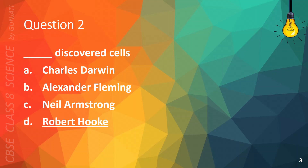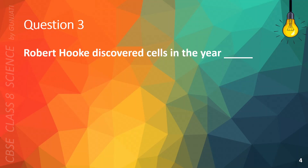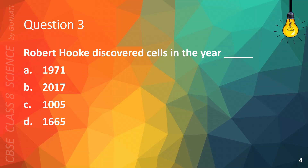Robert Hooke. Question 3. Robert Hooke discovered cells in the year blank. A. 1971. B. 2017. C. 1005. Or D. 1665. The correct answer is D. 1665.